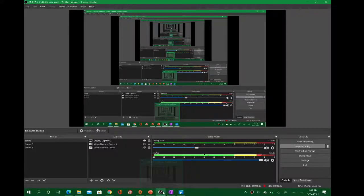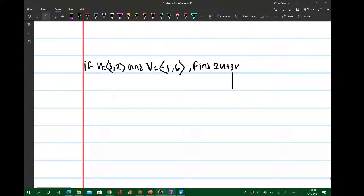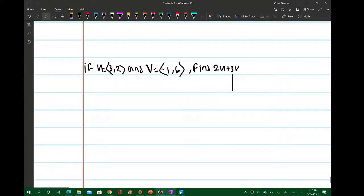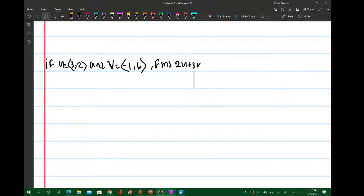All right, hello everyone. So let's look at this problem here: if u equals the vector <3, 2> and v equals the vector <-1, 6>, find 2u plus 3v. Now there's a property of vectors where if you have, for example, a constant times a vector...